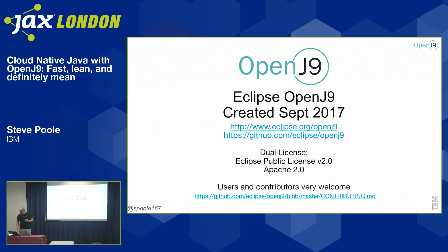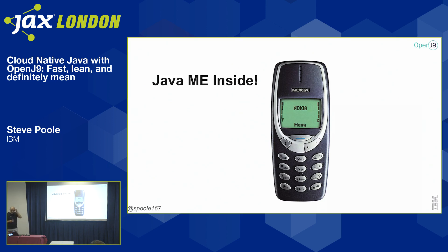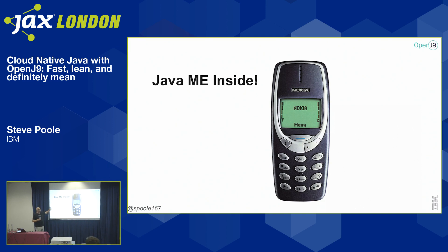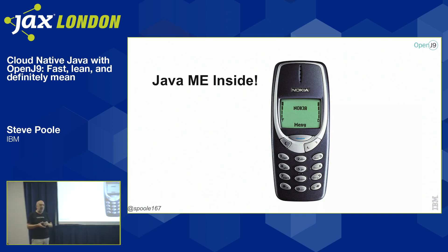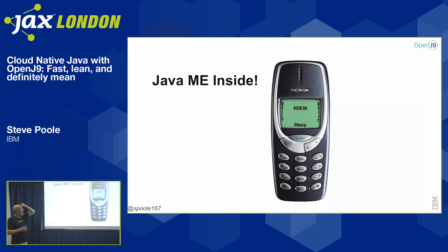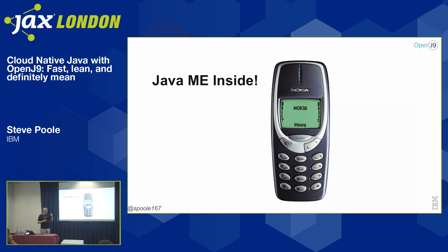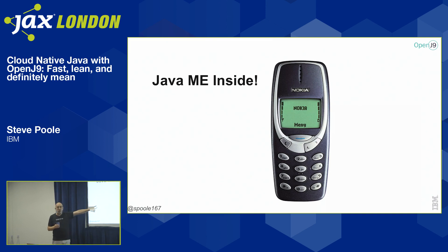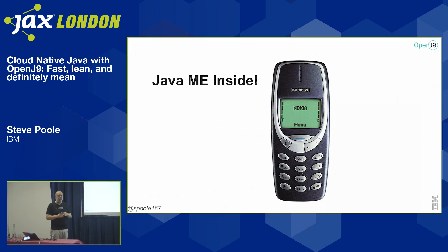So how does OpenJ9 make your life better? It was released in September and here we are in October 2018 - adoption is growing. This thing will help you with those stories. As a large company IBM has been doing Java for a long time and tried all sorts of different technologies. We acquired a company that had a precursor to J9, and it was designed to go in this embedded/mobile space because small footprint was really important.